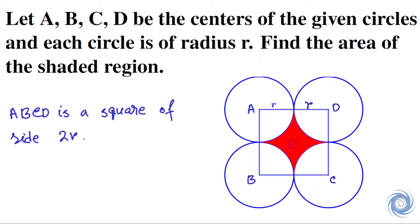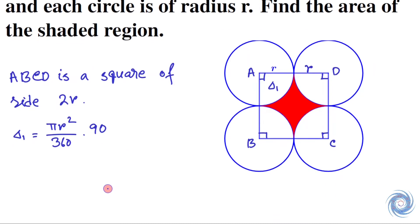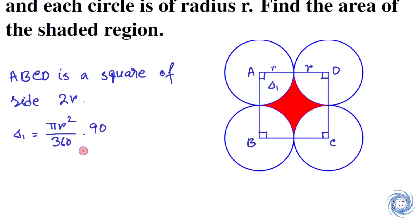Since ABCD is a square, therefore these angles are all 90 degrees. Let delta_1 be the area of this region, this white color region, and this angle is 90 degrees and here we have the radius of the circle is r. Therefore we can calculate the area of delta_1. Here we have delta_1 equals to πr² over 360 times 90, and this is 90, and this equals to delta_1 equals to πr² over 4.